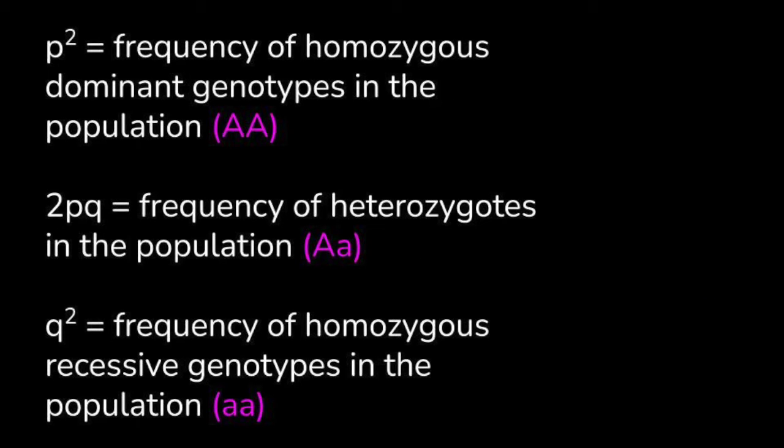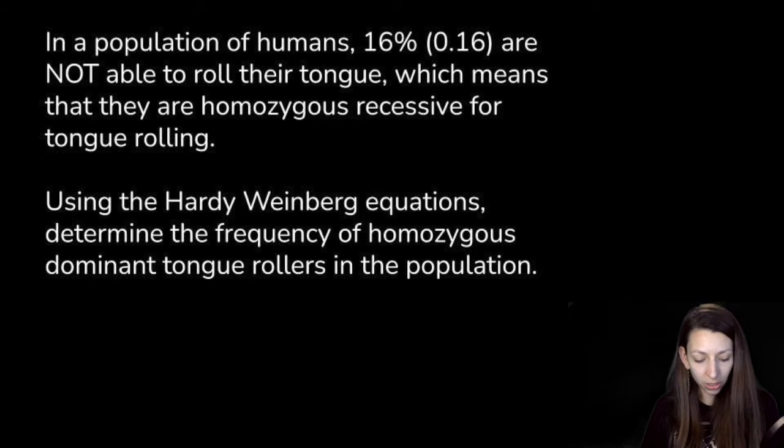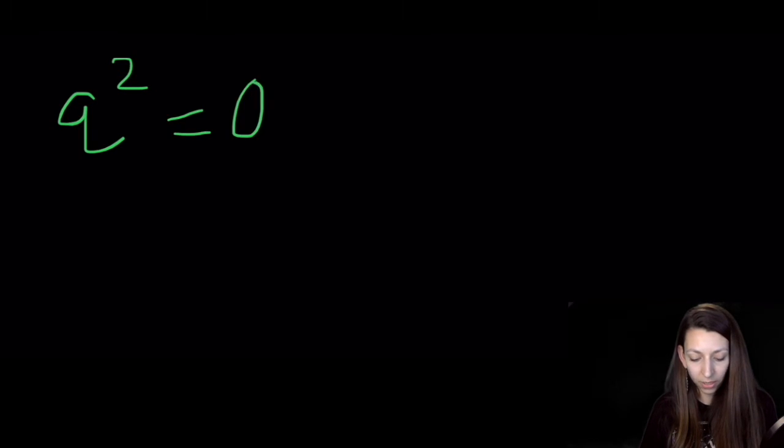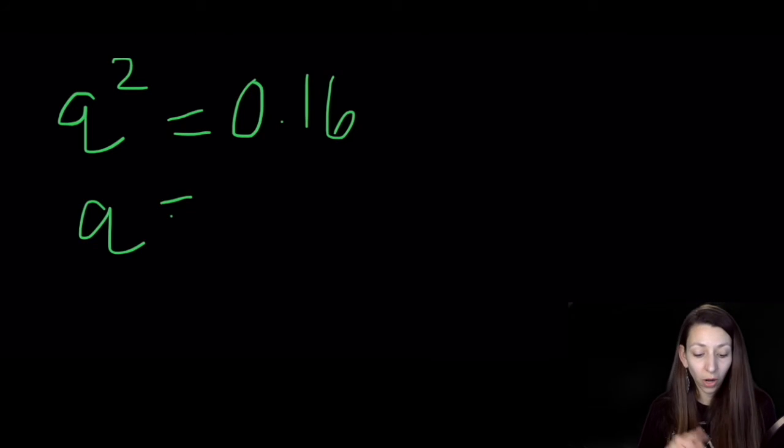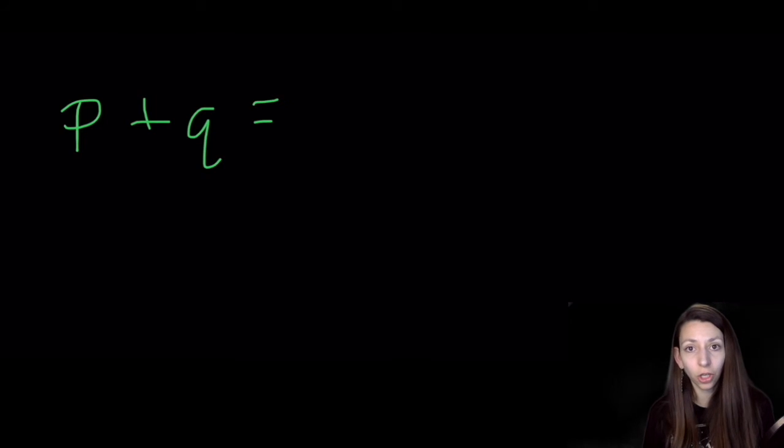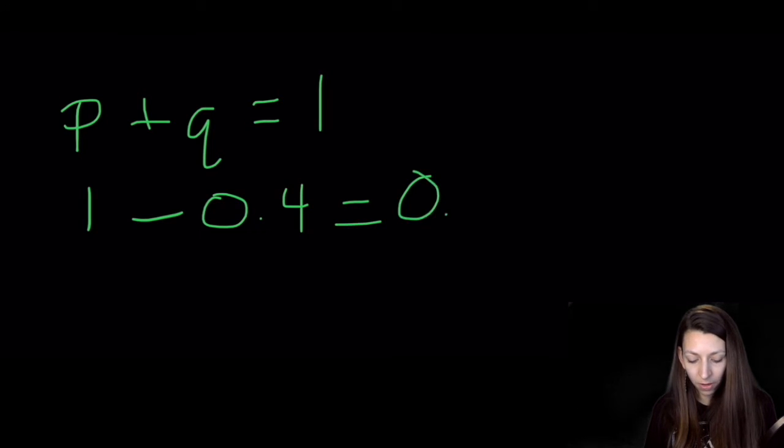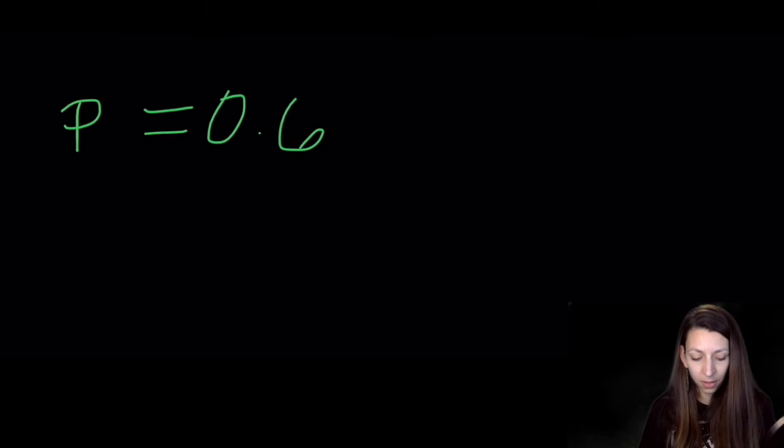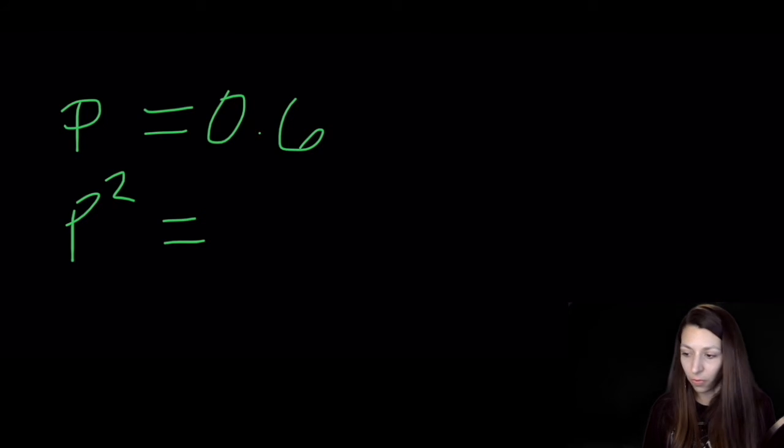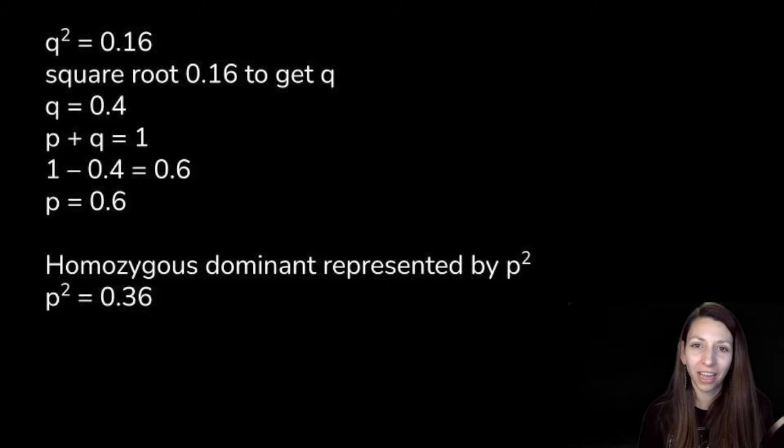To solve this problem, we need to know what it's asking. The frequency of homozygous dominant genotypes is P². We already know Q² is 0.16. We can square root Q² to get Q = 0.4. Now we can use that first equation, P + Q = 1, to determine P. We're just doing basic algebra to get the variables we need. Rearranging to solve for P gives us 0.6. And 0.6 squared is 0.36, which is our value for P², or the frequency of homozygous dominant tongue rollers in the population.